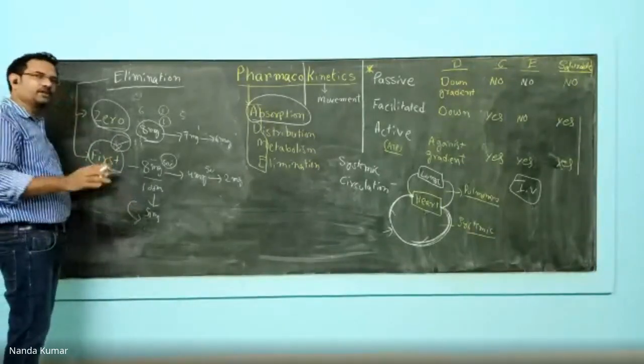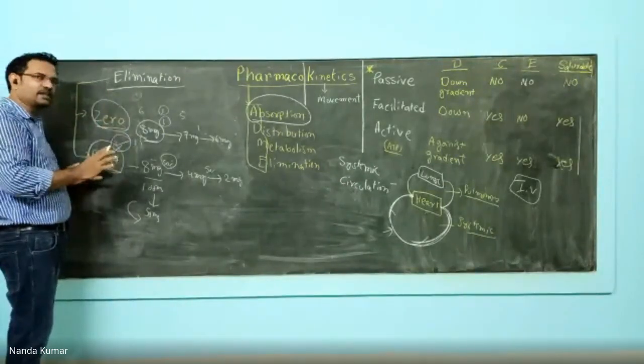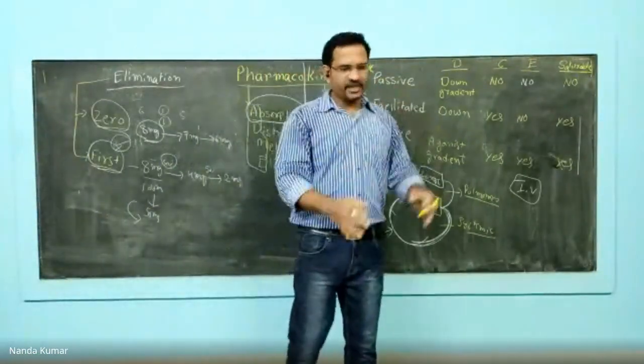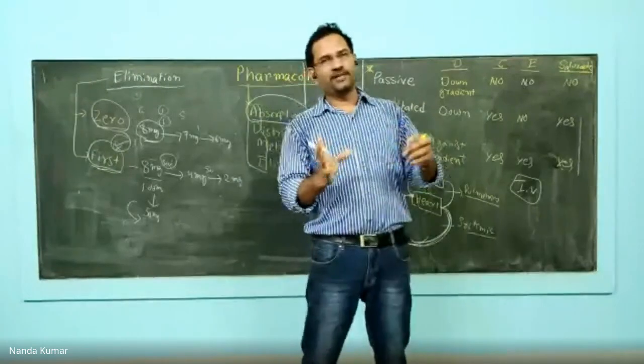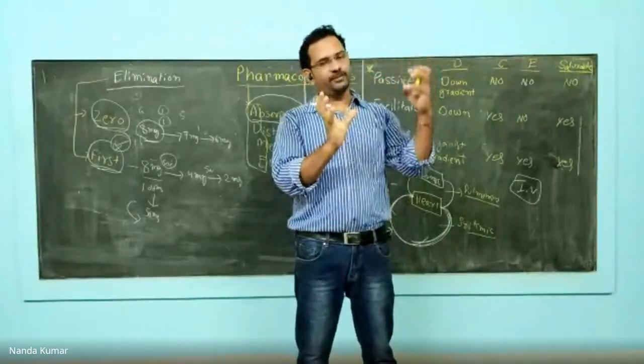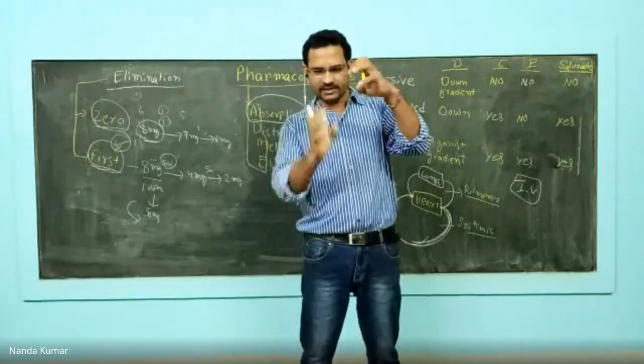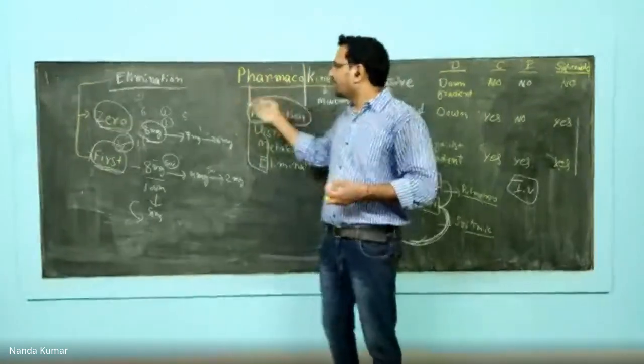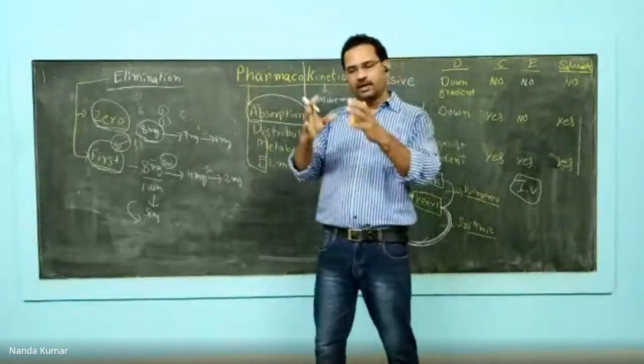If you use higher amount of drugs, higher elimination will be there. Getting back to elimination, it majorly happens from the kidney. All the blood gets into glomerular apparatus, and from the blood drugs will come there and get separated into tubules.